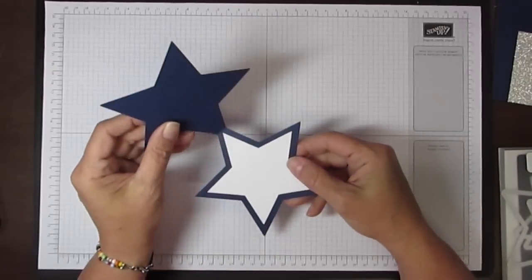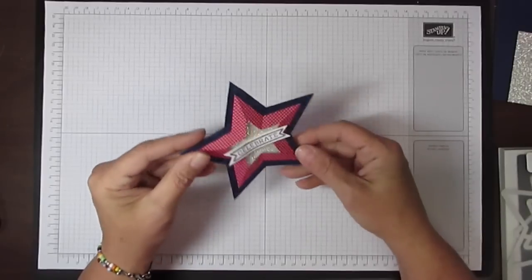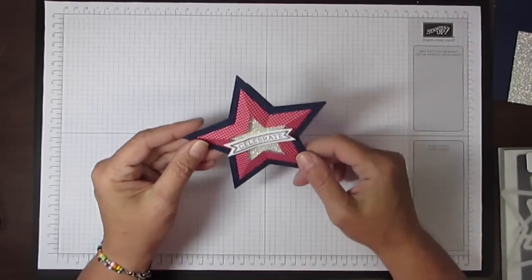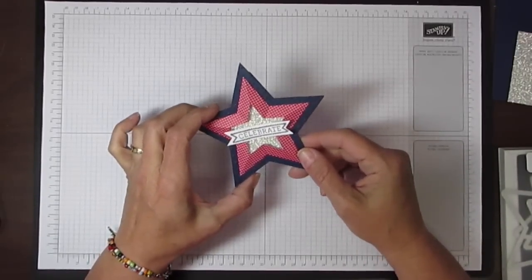It's actually a shaped card but it does hinge. I'm going to show you how to do that. It's really very simple and it's a lot of fun with these new star framelits.